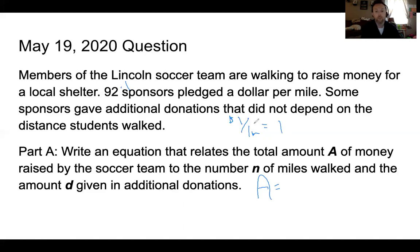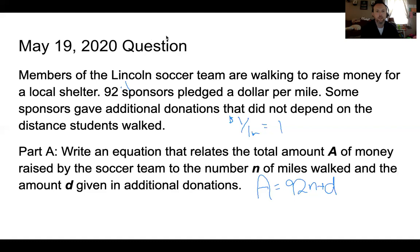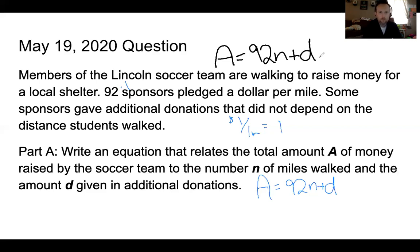I know that I have 92 sponsors pledging $1 per mile, so 92 times one is the amount. But I don't know how many miles were walked, so we're going to represent that with N. There's also additional donations that don't depend on the amount of miles walked — we're just going to represent that with the variable D. So A equals 92N plus D is the equation that you should have come up with.